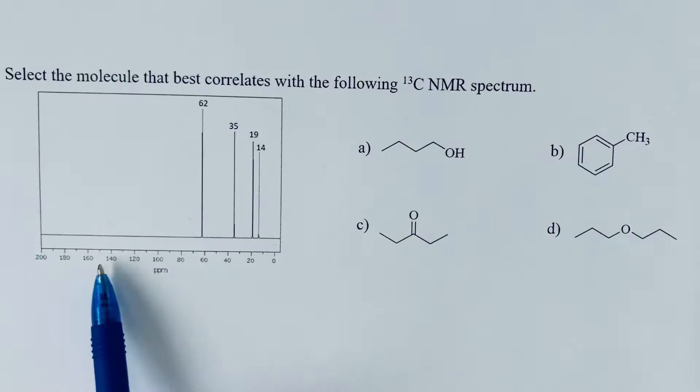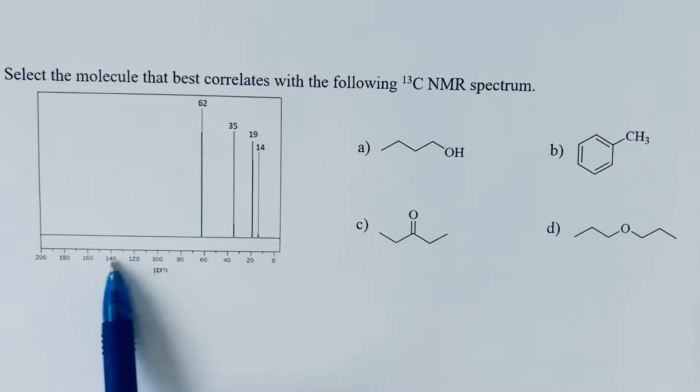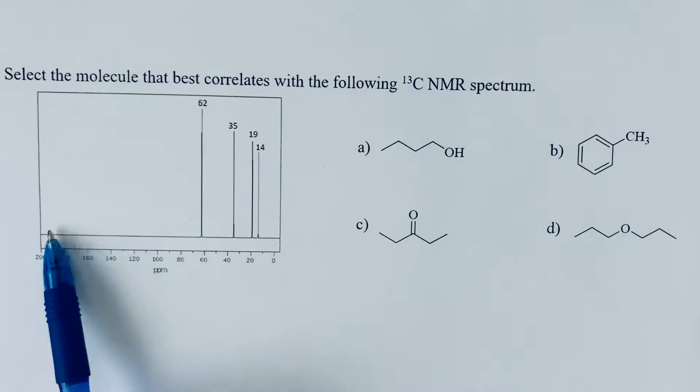I would mentally divide up the regions on the carbon-13. If I had a carbonyl, I would expect it to be on this high end. If I had a double bond, I would expect it to be in this region. And I see that both of those regions are empty.